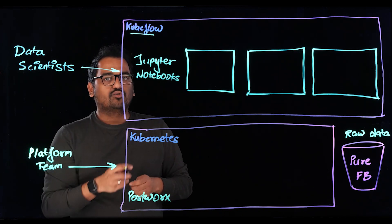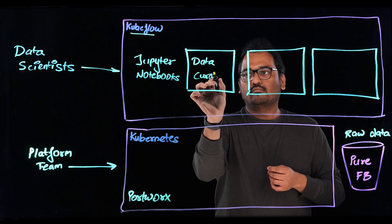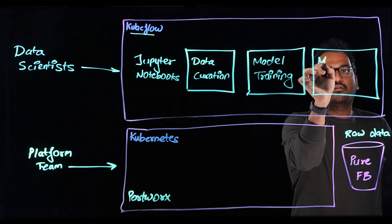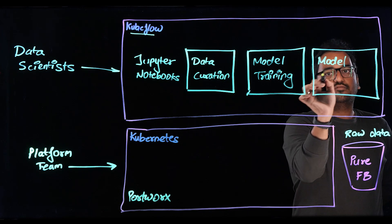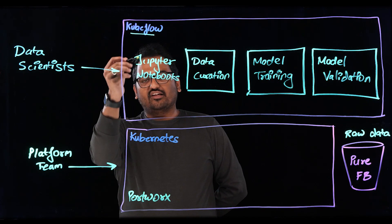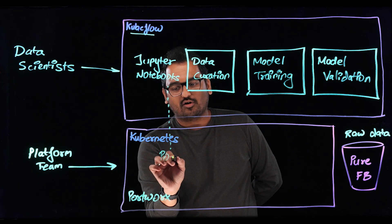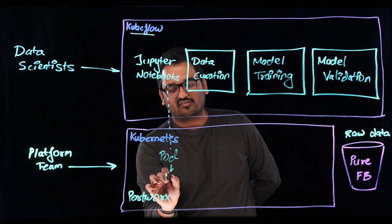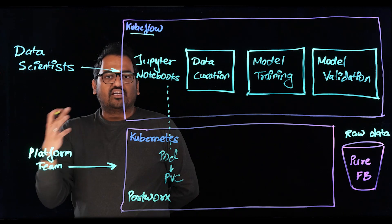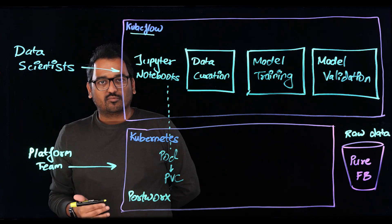So as part of the Jupyter Notebook, I can define a pipeline which includes things like my data curation phase, my model training, and then I can run a model test or validation phase as well. Whenever I deploy a Jupyter Notebook using the Kubeflow UI, since it's running on Kubernetes, it automatically deploys a Kubernetes pod, which is backed by a persistent volume claim, which is backed by Portworx. The data scientist doesn't have to open up tickets to get access to resources. All of this process is automated because of the way Kubeflow, Kubernetes, and Portworx work together.